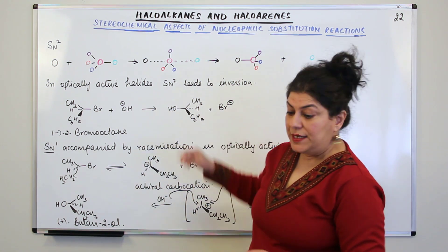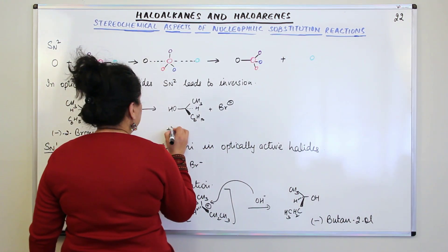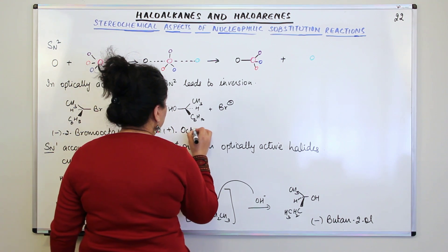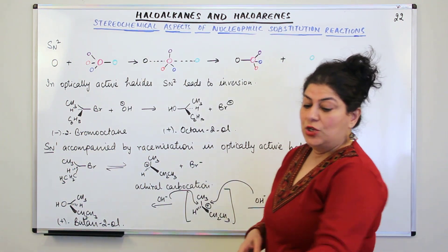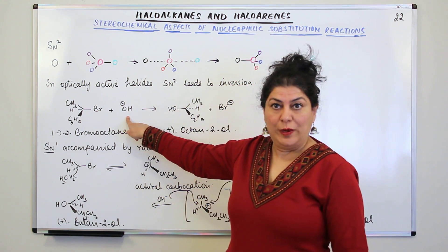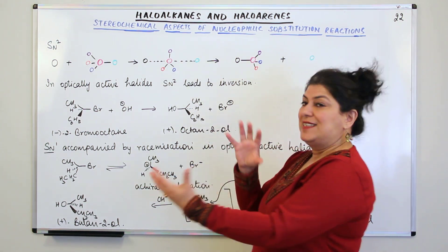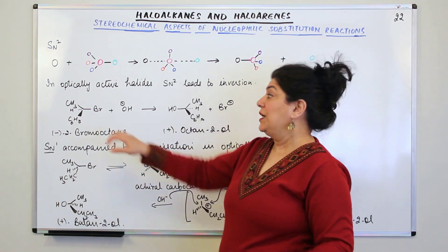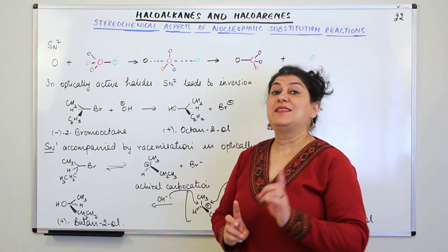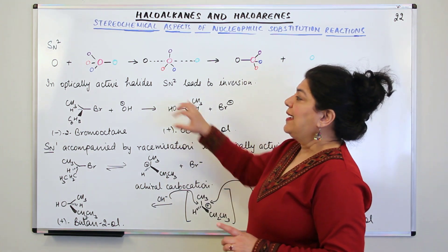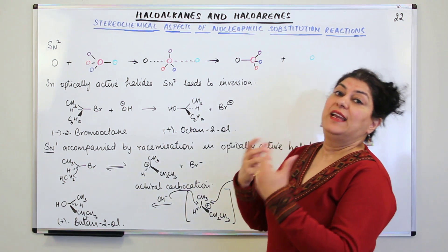With the inversion, the compound you obtain is octan-2-ol, and it would be dextrorotatory — (+)-octan-2-ol. The OH group is attached to the second carbon, replacing the bromine. The product is also optically active, but the configuration has inverted. If the starting material was levorotatory, the product is dextrorotatory by the same angle. This demonstrates that when SN2 mechanism is followed, the reaction leads to a product with an inverted configuration.